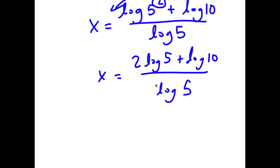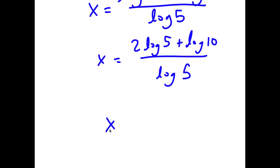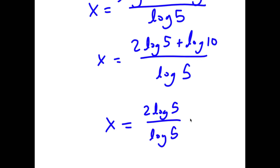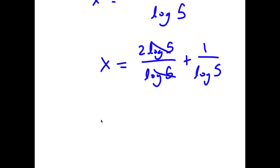And log 10 is equal to 1. So I have x is equal to 2 log 5 over log 5 plus 1 over log 5. These two cancel out, so I get x is equal to 2 plus 1 over log 5.